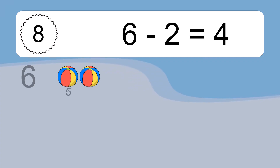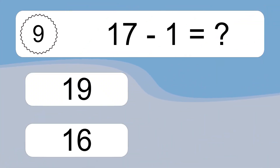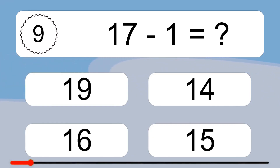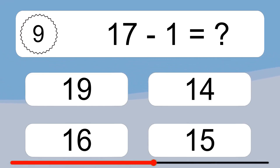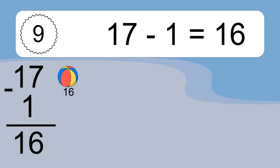6 minus 2 equals 4. Let's count it: 5, 4. 17 minus 1 equals what? 17 minus 1 equals 16. Let's count it: 16.